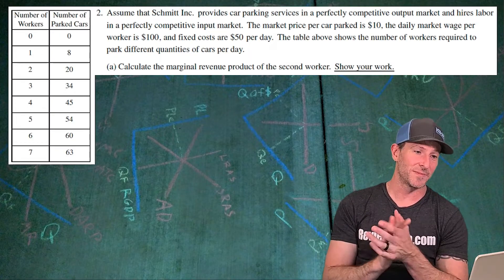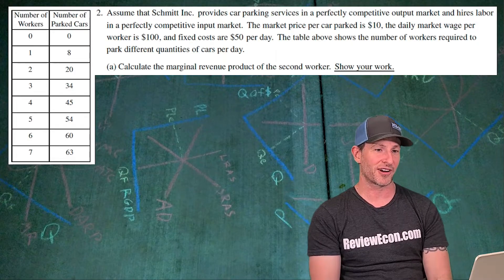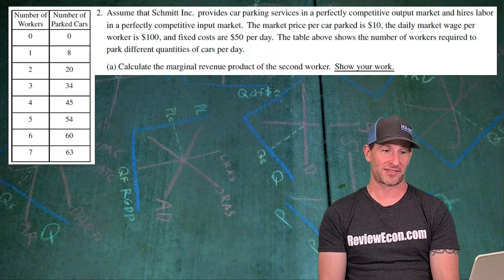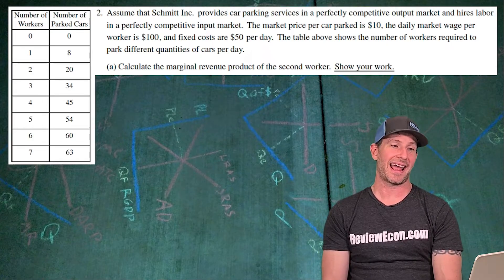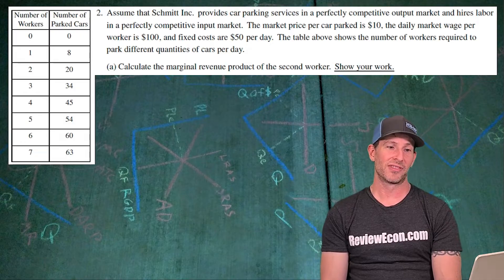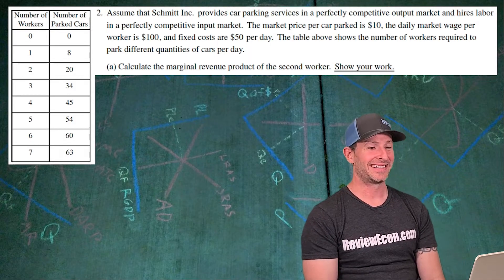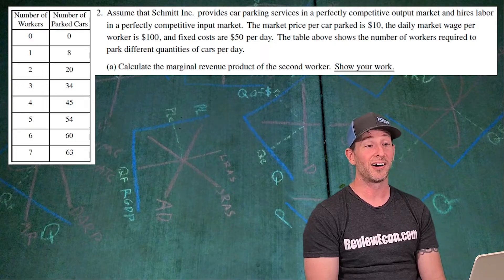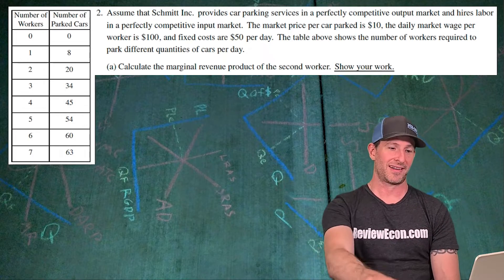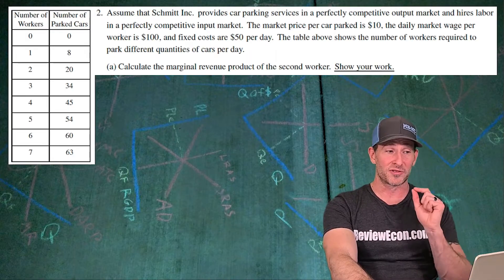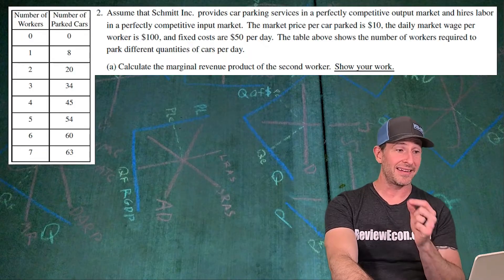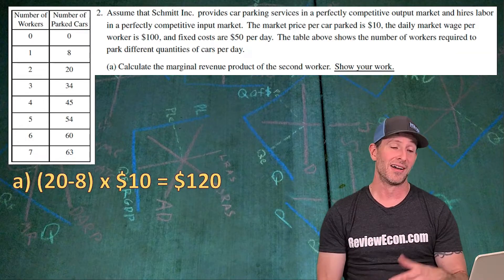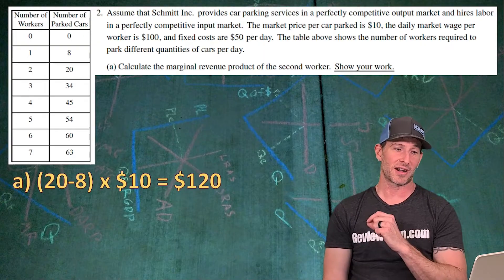For part two: Schmidt Inc. provides car parking services in a perfectly competitive output market and hires labor in a perfectly competitive input market. The market price per car parked is $10, the daily market wage per worker is $100, and fixed costs are $50 per day. First, we calculate the marginal revenue product of the second worker. Total product goes from 8 cars to 20 cars, so marginal product is 12. Multiply by $10 per parked car: MRP equals $120.